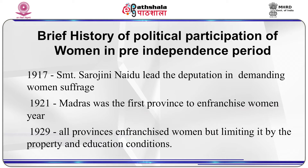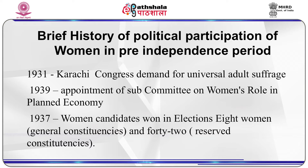Let us begin with the brief history of political participation of women in the pre-independence period. Srimati Sarojini Naidu led the deputation in 1917 to Montague and Lord Chelmsford demanding women's suffrage. Madras was the first province in 1921 to enfranchise women. Later, in 1929, all provinces enfranchised women, but limiting it by property and education conditions. The demand for universal adult suffrage was made by the Fundamental Rights Resolution of the Congress in 1931. In 1939, the Subcommittee on Women's Role in Planned Economy was appointed. In the 1937 elections, women participated with great enthusiasm; eight women were elected from general constituencies and 42 won from reserved ones.